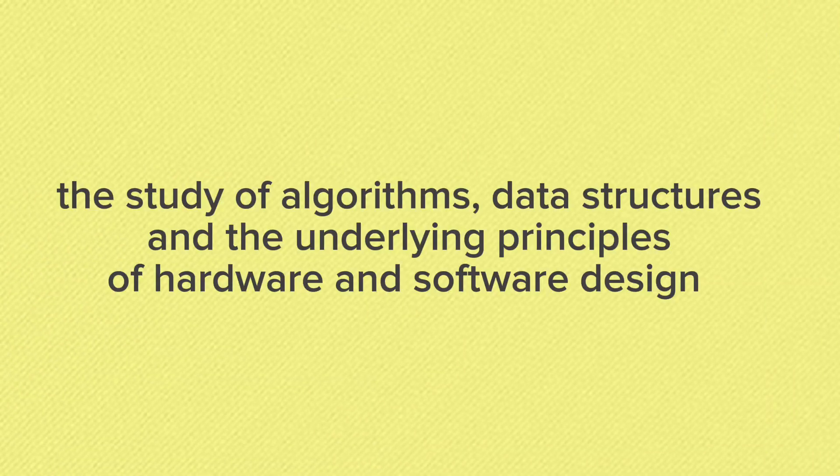First, I want us to define the words 'computer science.' What does computer science really mean? According to the internet, computer science is the study of algorithms, data structures, and the principles underlying the design of software and hardware. Honestly, I did not understand anything from that definition.